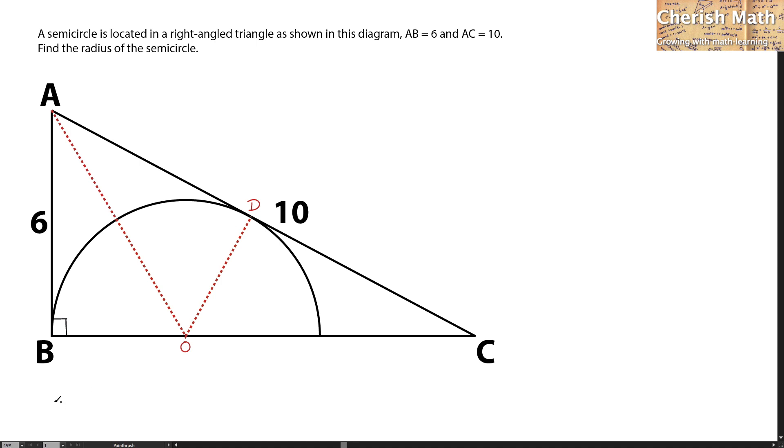Let me work out the length of BC by using the Pythagorean theorem. That would be the square root of 10 squared minus 6 squared, and the answer is 8 units.